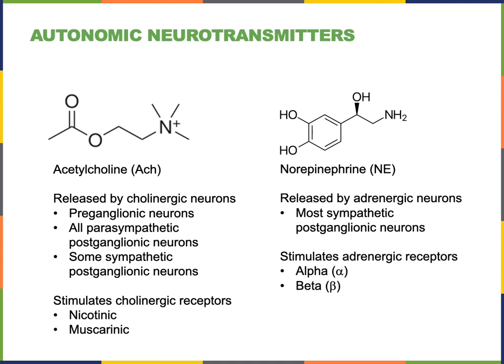All preganglionic fibers in the autonomic nervous system are cholinergic fibers — they all release acetylcholine to stimulate the postganglionic neurons in the autonomic ganglia. Those postganglionic neurons express nicotinic acetylcholine receptors, so acetylcholine binds to the receptor causing opening of an ion channel, producing graded potentials that can stimulate action potentials in the postganglionic fibers. All postganglionic fibers in the parasympathetic division are also cholinergic and release acetylcholine, and the effector organs they regulate express muscarinic acetylcholine receptors.